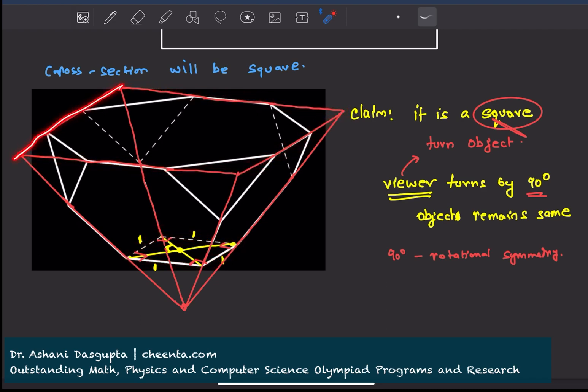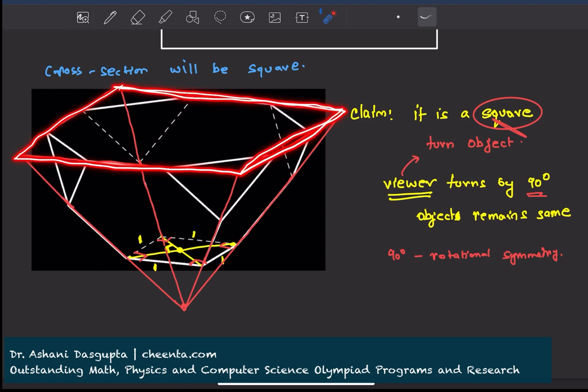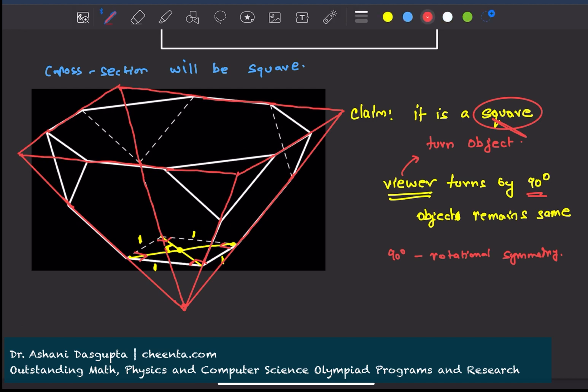What is the area of this top square? Well, first of all, notice that this is 120 degrees and this is 120 degrees because it's a regular hexagon.